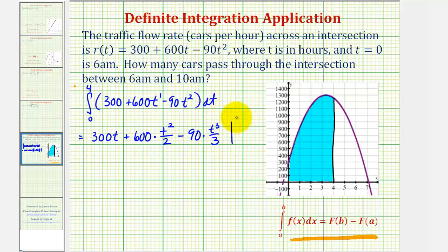We'll evaluate this at the upper and lower limits of integration. Before we do this, let's simplify. We'd have 300t, so let's simplify to 300t squared. And this would simplify to just 30t to the third. So minus 30t to the third.